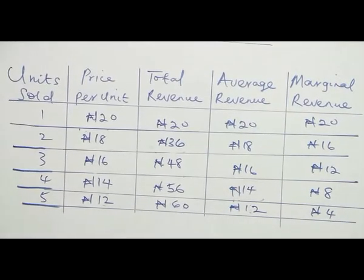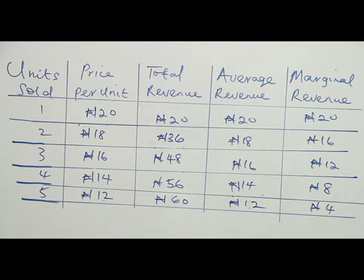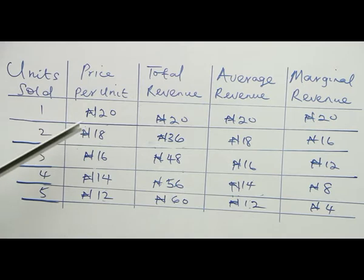Under revenue analysis in imperfect markets, prices of goods and services can be influenced either by the buyer or the seller. Unlike a perfect market where we have said the price is constant irrespective of whether you are a seller or a buyer. In imperfect markets, the price per unit of the commodity can change — either increasing or decreasing.